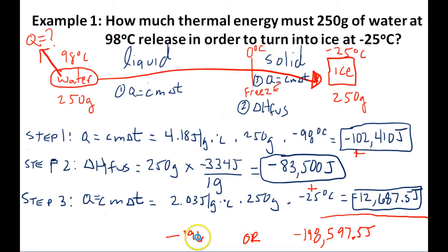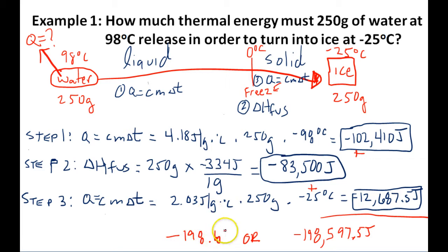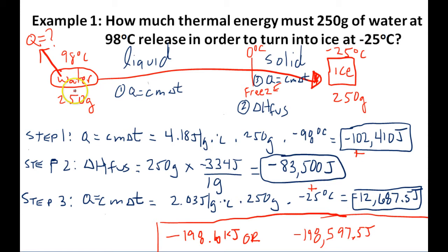So to answer our question: how much thermal energy must this water release in order to go from 98 degrees Celsius to negative 25 degrees Celsius? It's going to have to release 198.6 kilojoules, or negative 198,597.5 joules.